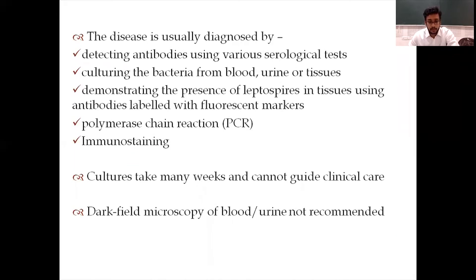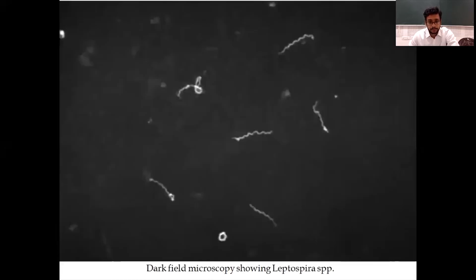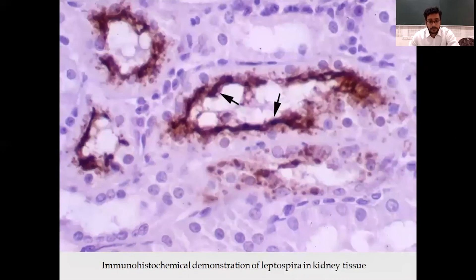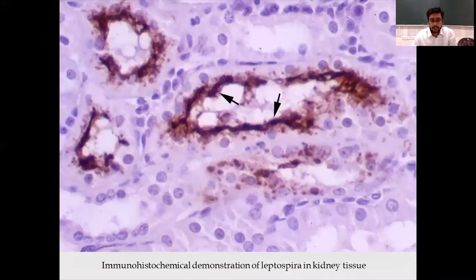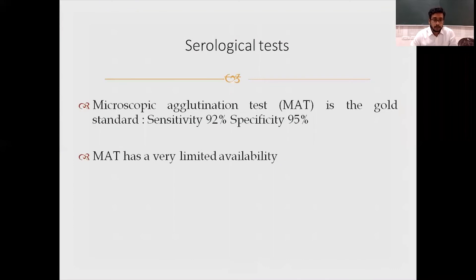This is how leptospira looks under dark-field microscopy. This is an immunohistochemical demonstration of leptospira in kidney tissue — you can see the organism well marked. The gold standard serological test is the Microscopic Agglutination Test (MAT), with a sensitivity of 92% and specificity of 95%. The only drawback of MAT is its very limited availability.